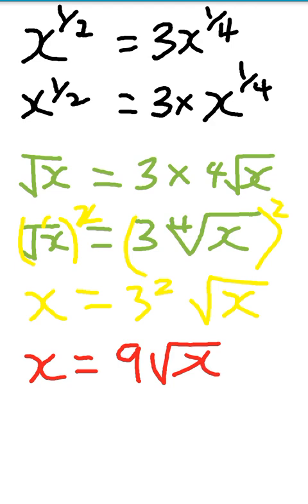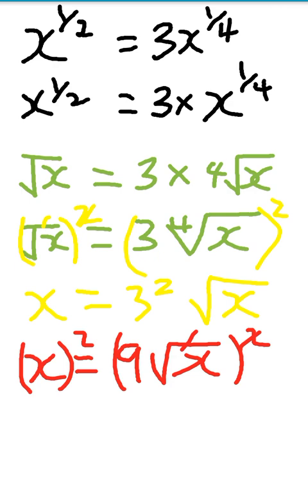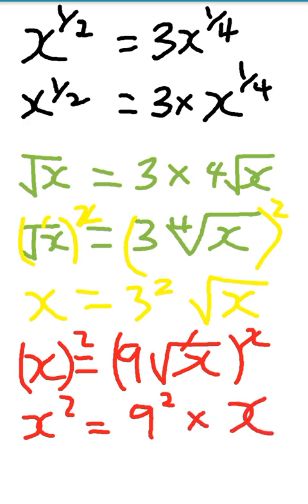Next, we are going to square both sides again to get rid of the square root of x. When we square both sides, the square cancels the square root on the right, and the square also affects the 9. So we have x squared equal to 9 squared times x, and 9 squared is 81, giving us x squared equal to 81x.